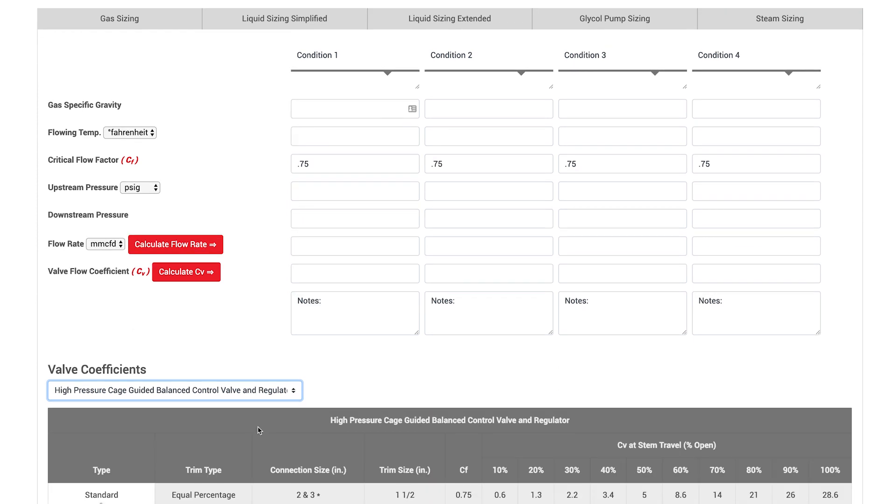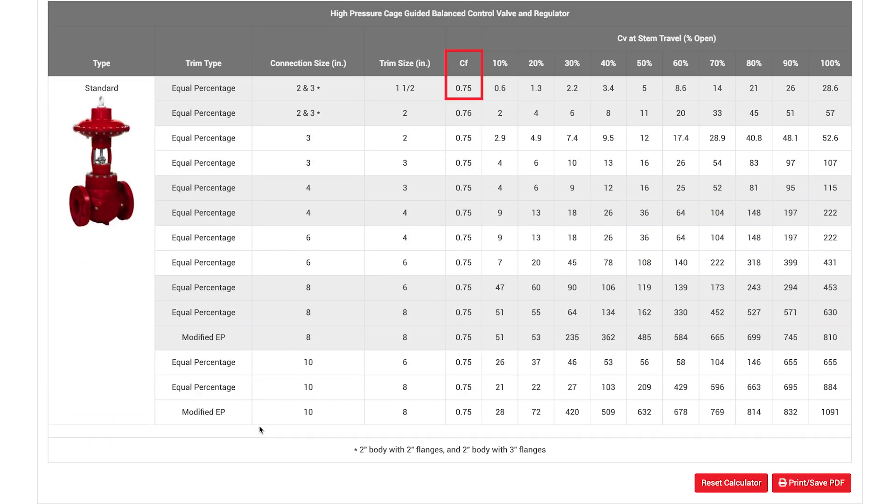Note that all globe-style control valves have a CF that stays consistent regardless of the stem travel, unlike the CV value which increases as the valve opens.